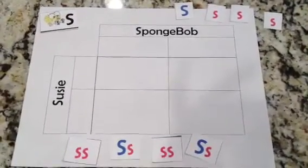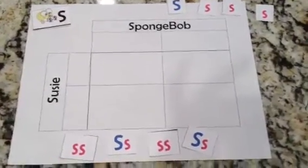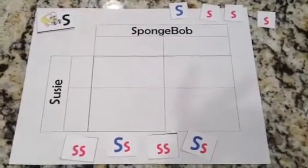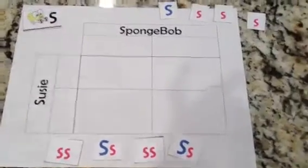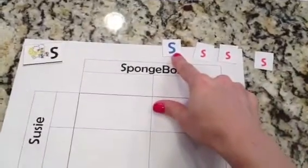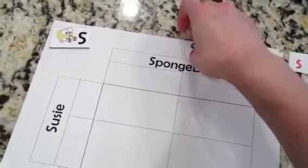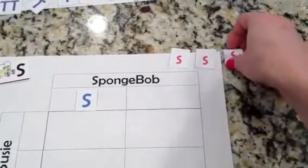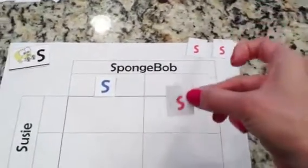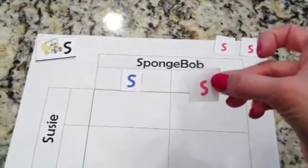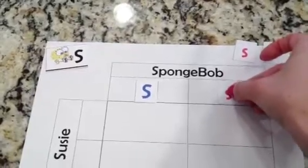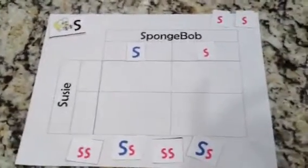Remember, in our example, it said that SpongeBob was heterogeneous for being square — square being dominant here. So what we're going to do is put one of the big S underneath SpongeBob's name, and you can go along and do that with me. And since he's heterogeneous, he has a little S. If it was homogeneous for being square, he'd have two big S's. I color-coded them as well to make it a little easier to see.